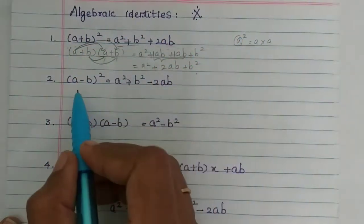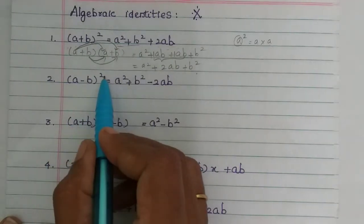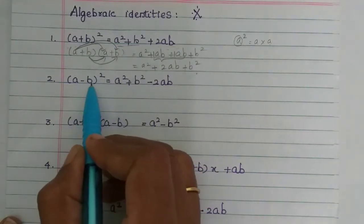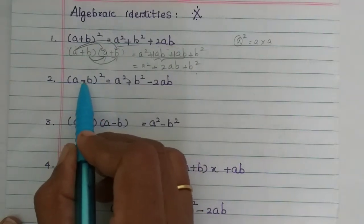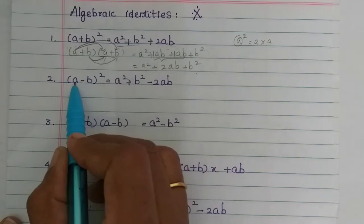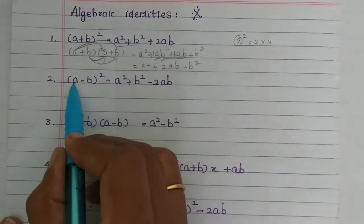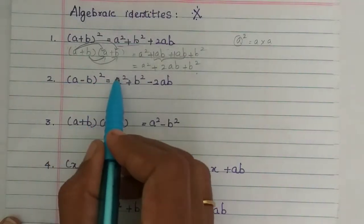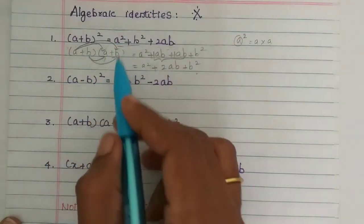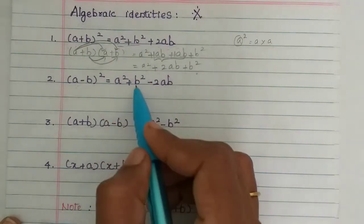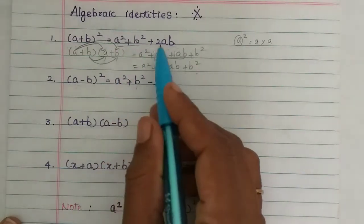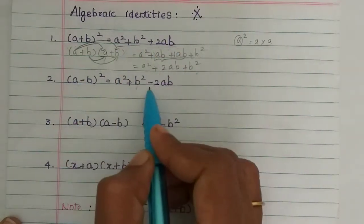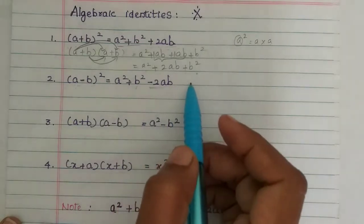Now the second formula is: a minus b the whole square. We have the same structure — a squared plus b squared — but instead of plus 2ab, it becomes minus 2ab.